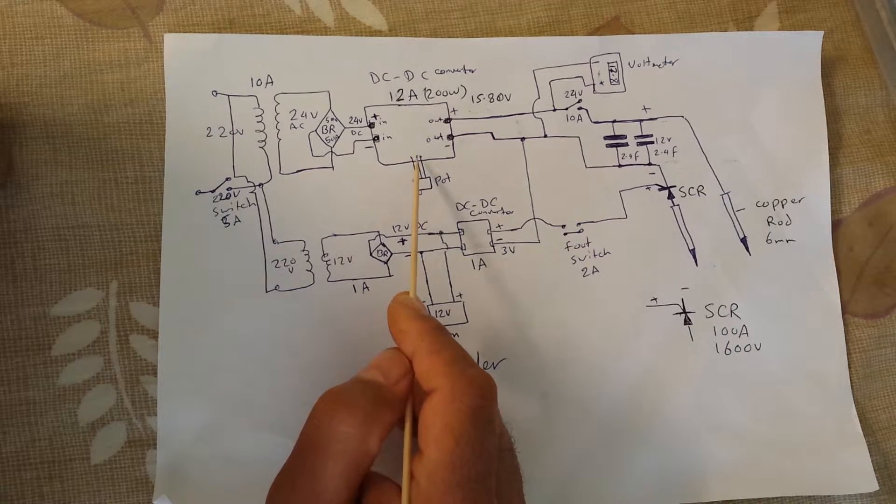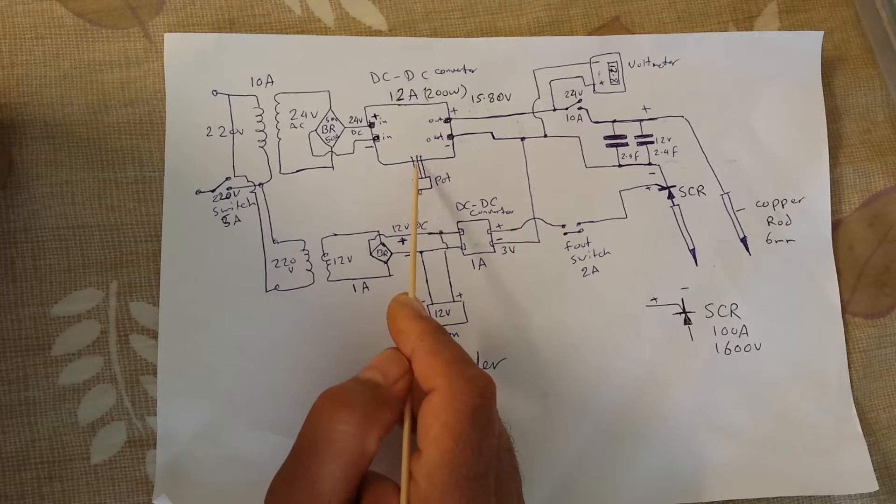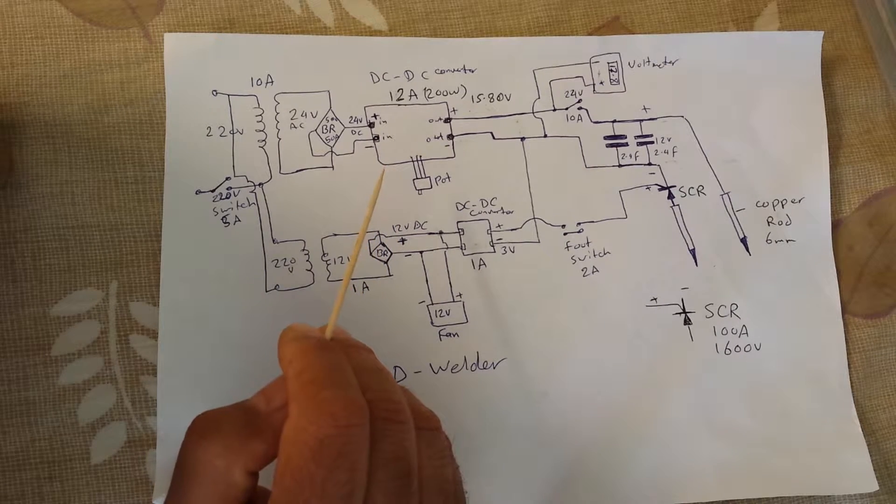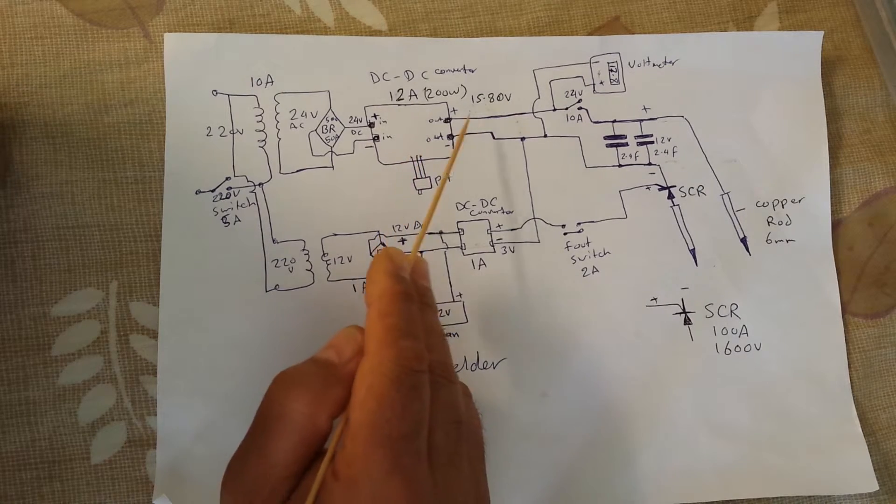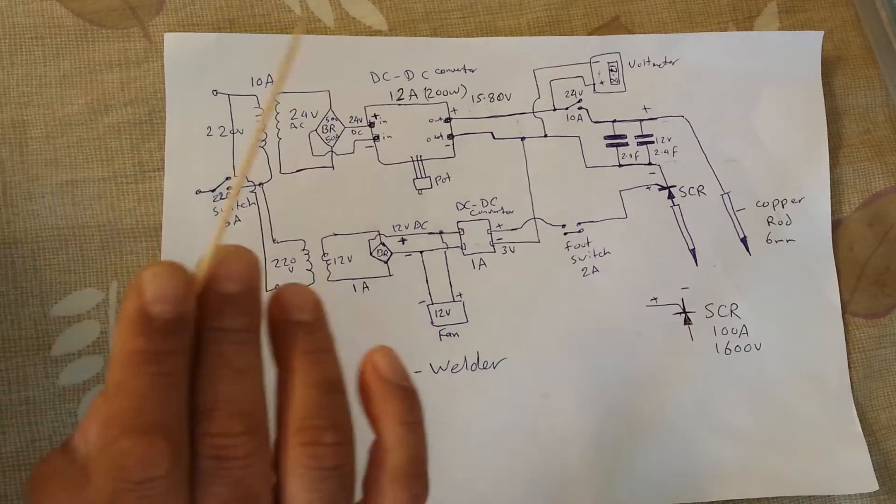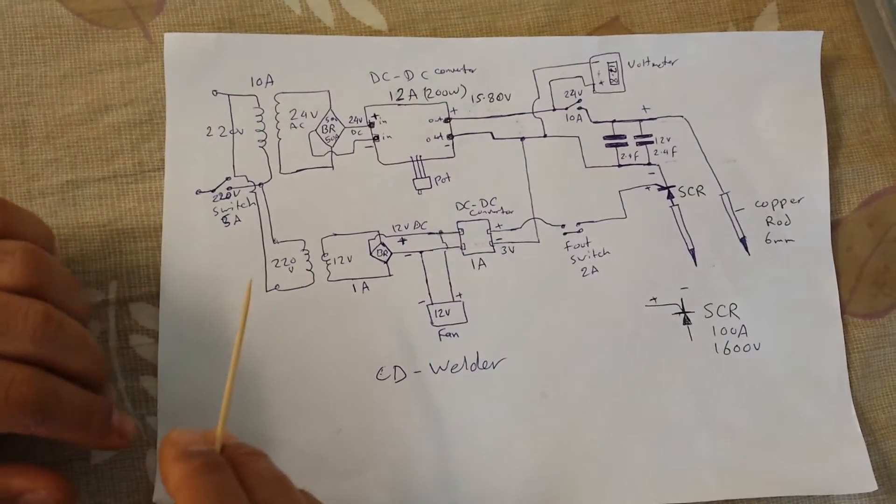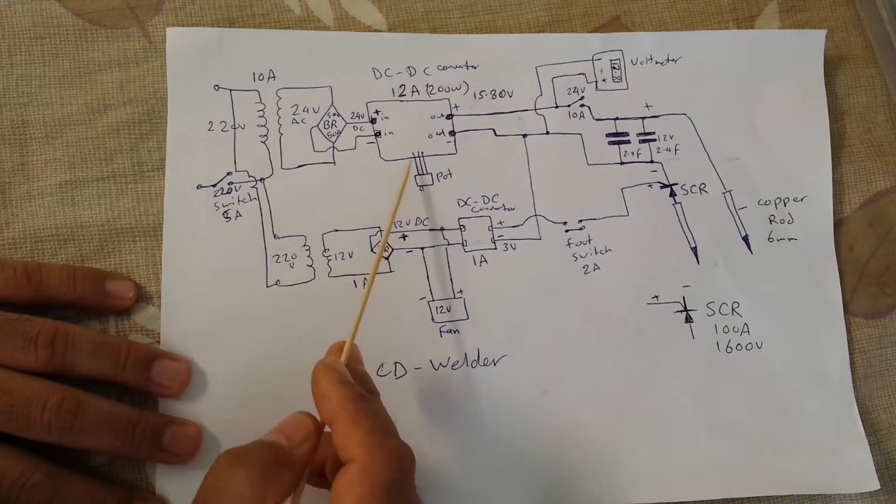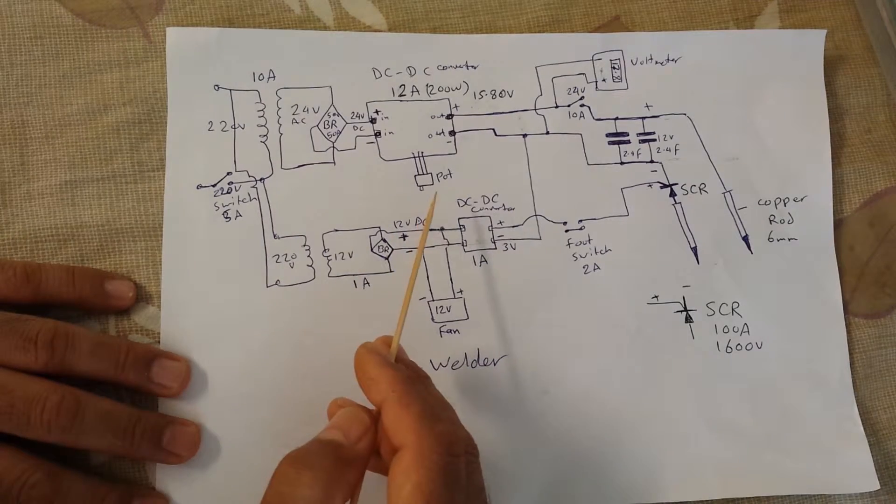What I did is I took out the potentiometer that's on the DC-DC converter and made some extension wires and took it out. I put it in a place where I can easily adjust the output voltage from outside of the box that I put all these parts in.